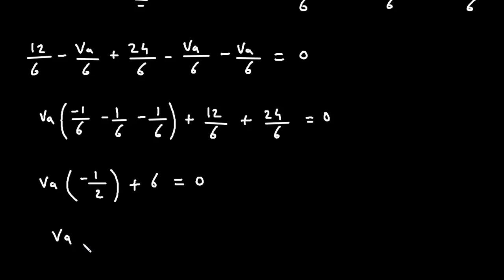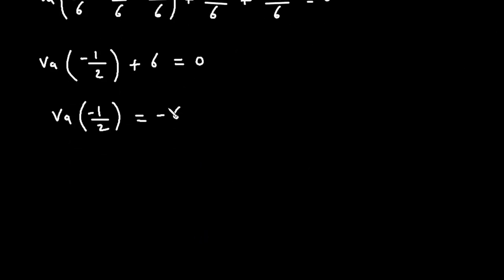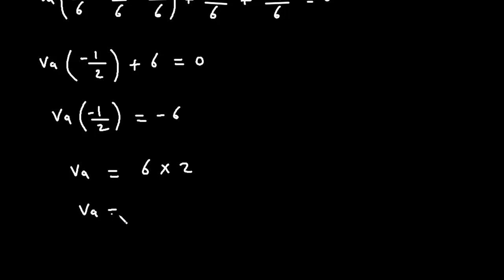So VA times (minus 1/2) plus 6 equals 0. Taking 6 to the right side gives minus 6. The two negatives cancel, so VA equals 6. Taking the 2 to the right side gives VA equals 12 volts. Now we have the value of VA.